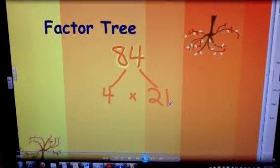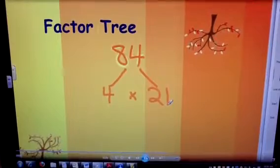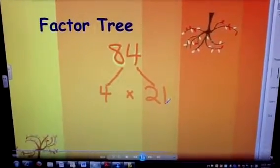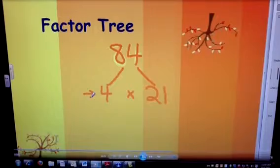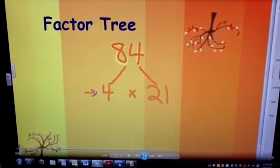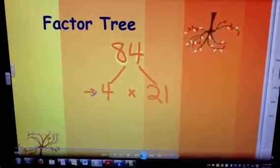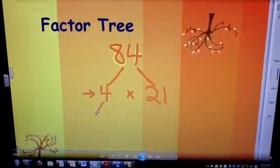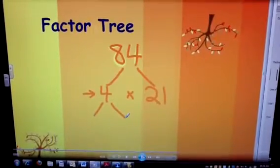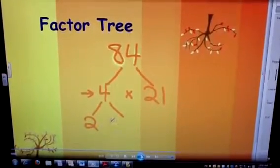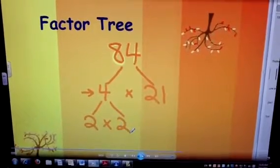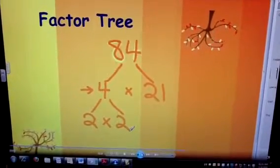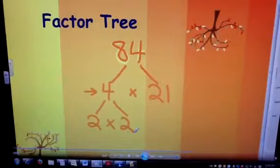Now what I'm going to do is go ahead and look at each of these numbers. Number four I know is a composite number, and it's not prime, so I need to break it down further. So four can be broken down into two times two. Those are now both prime, so those will be part of my prime factorization.